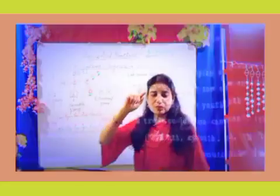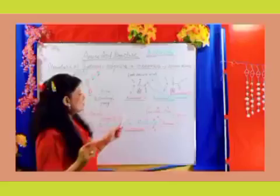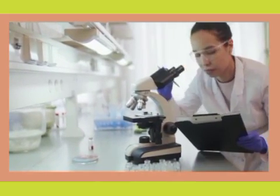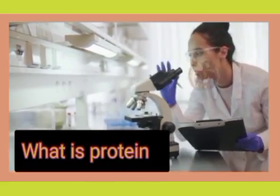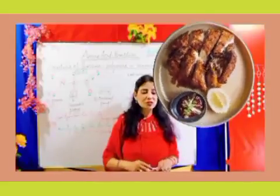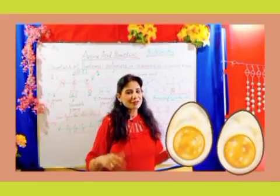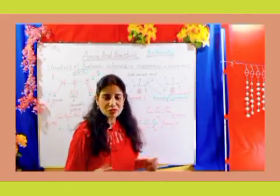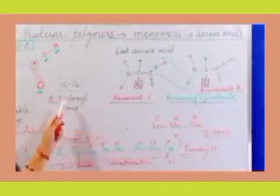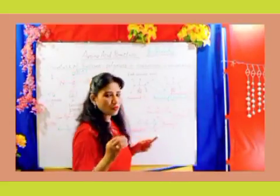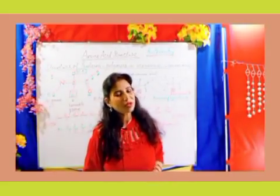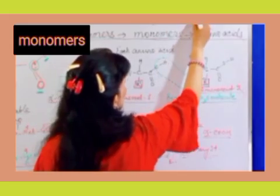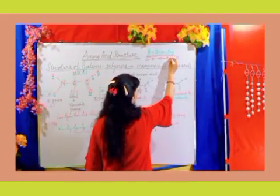Let's start with the primary structure. We will be studying amino acid structure. The first important thing to understand is: what is protein? We eat carbohydrates and other food — these are polymers, and these polymers are made of small monomer units. Think of these as monomers that are linked together in a chain.